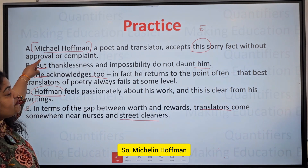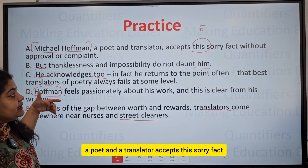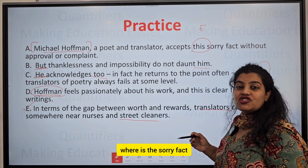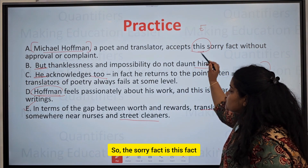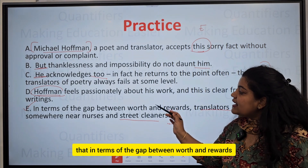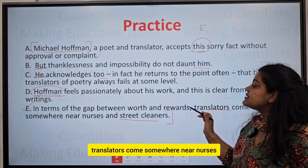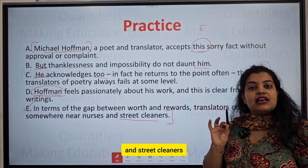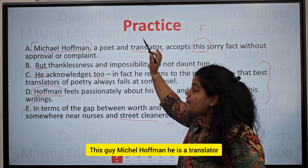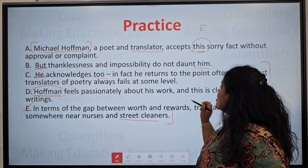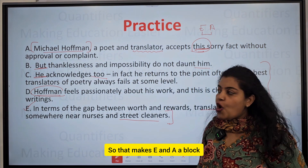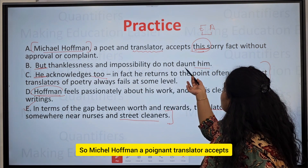Next in the story: 'Michel Hoffman, appointing a translator, accepts this sorry fact.' Out of all the sentences, the 'sorry fact' is the fact highlighted in sentence E — that translators come somewhere near nurses and street cleaners in terms of worth and rewards. Since Hoffman is himself a translator, he accepts this sorry fact. This makes E and A a block.